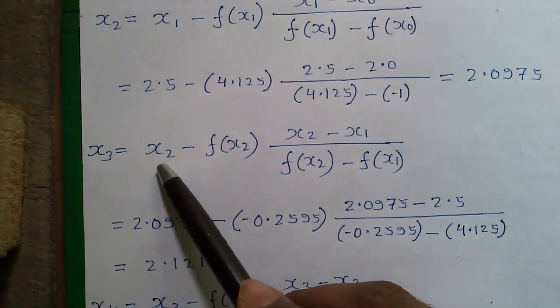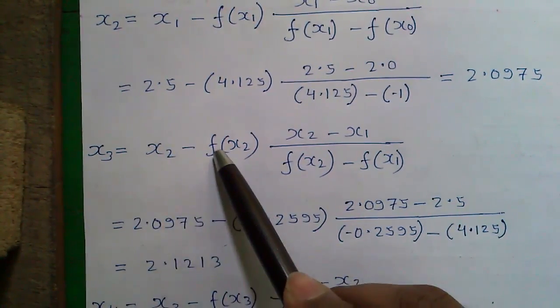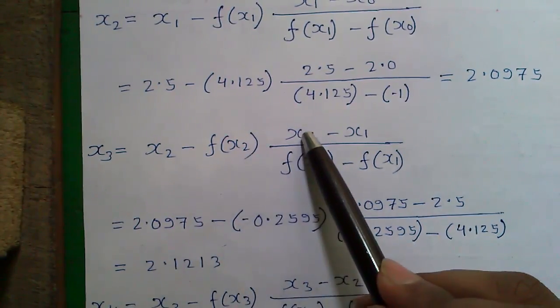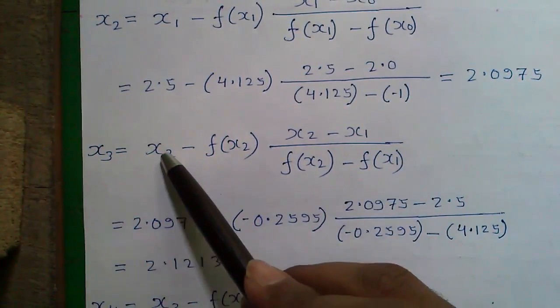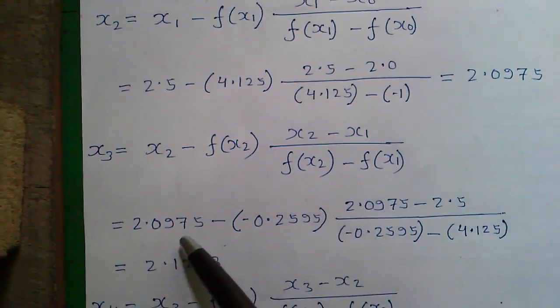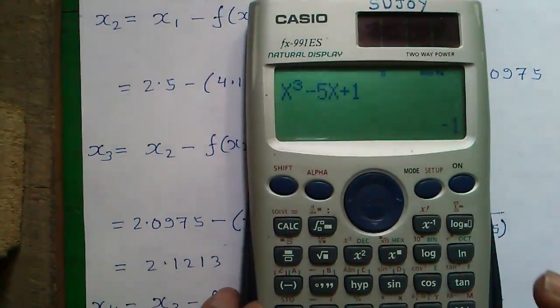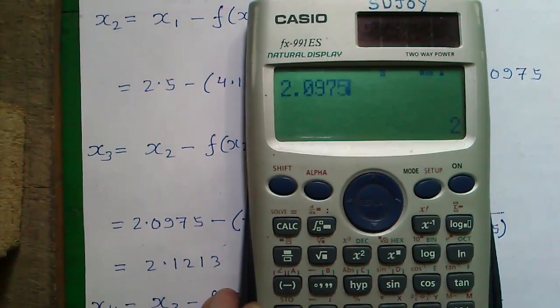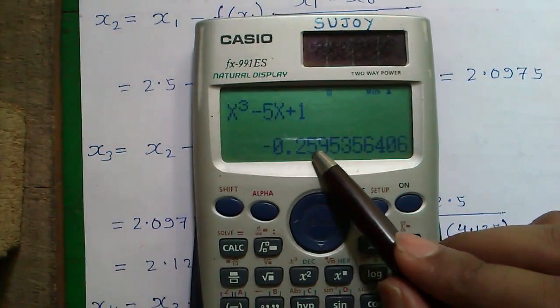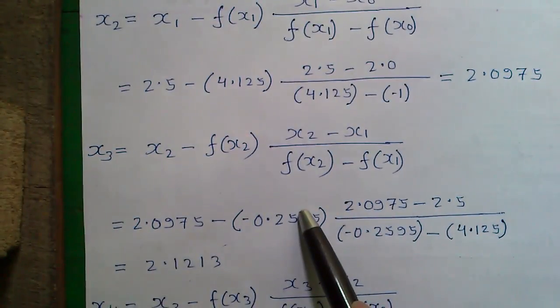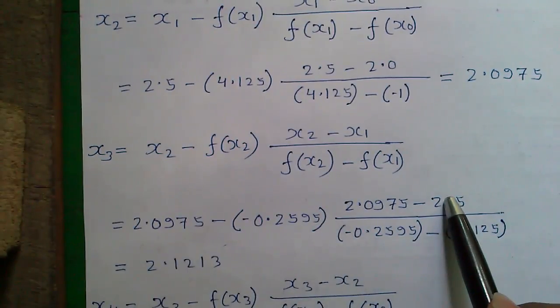Similarly for x₃ it will be using previous values, that is for x₃ it will be x₂ - f(x₂) × (x₂ - x₁) / (f(x₂) - f(x₁)). So x₂ is 2.0975 - f(x₂) will be -0.2595.